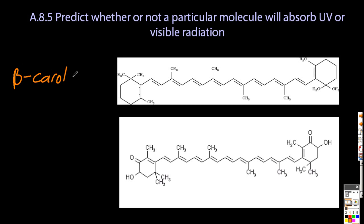OK, so this looks complicated, but it's really quite simple. Now, for example, beta-carotene has lots of single, double, single, double bonds, so-called conjugated double bonds. And that will absorb visible radiation.